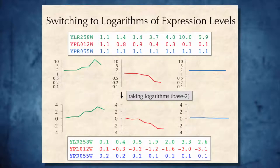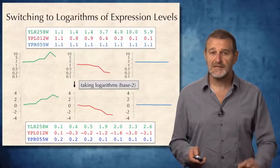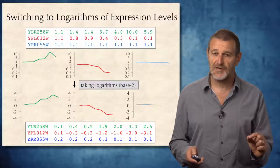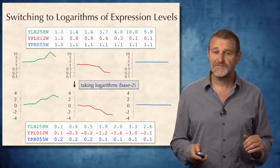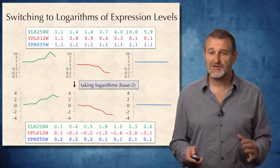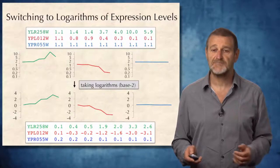Instead of analyzing expression levels directly, biologists often prefer to study logarithm of expression level, and we will follow this approach. Below this slide, you see expression level represented as logarithm. We just need to remember that positive expression levels after transforming to logarithm correspond to increase in gene expression, and negative expression levels correspond to decrease in gene expression.